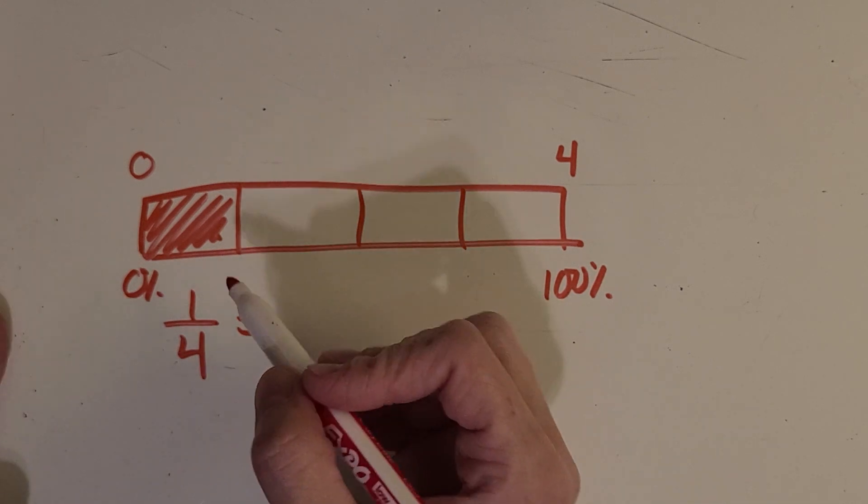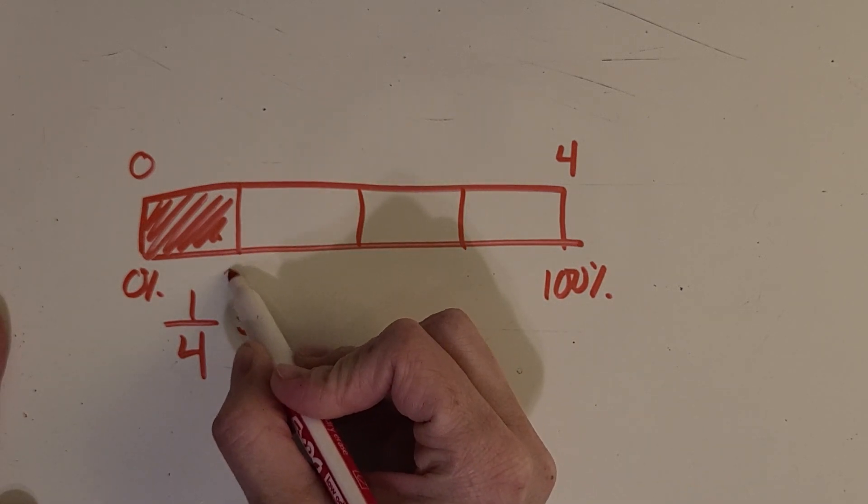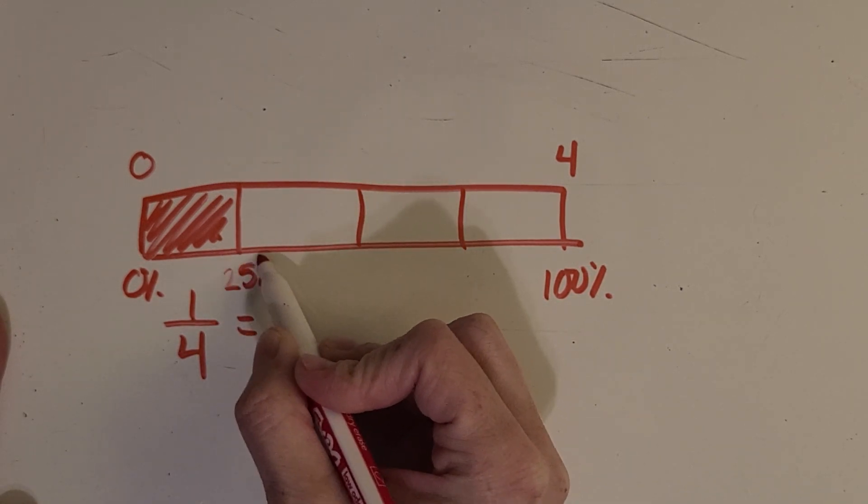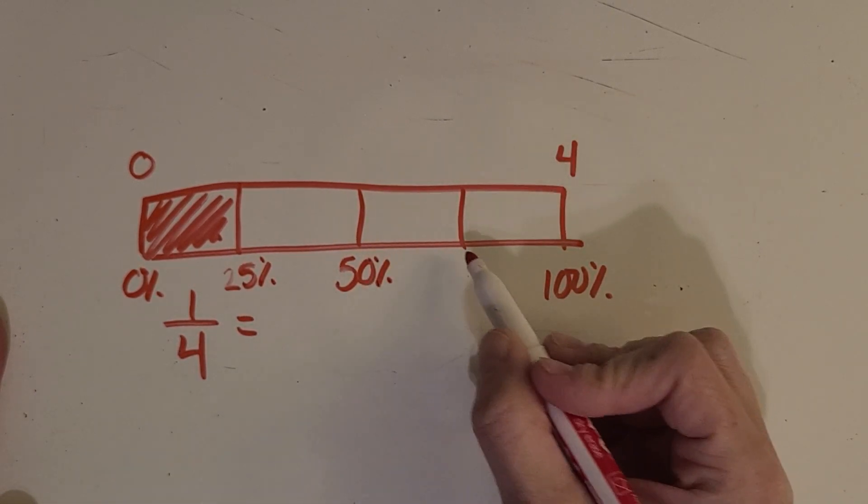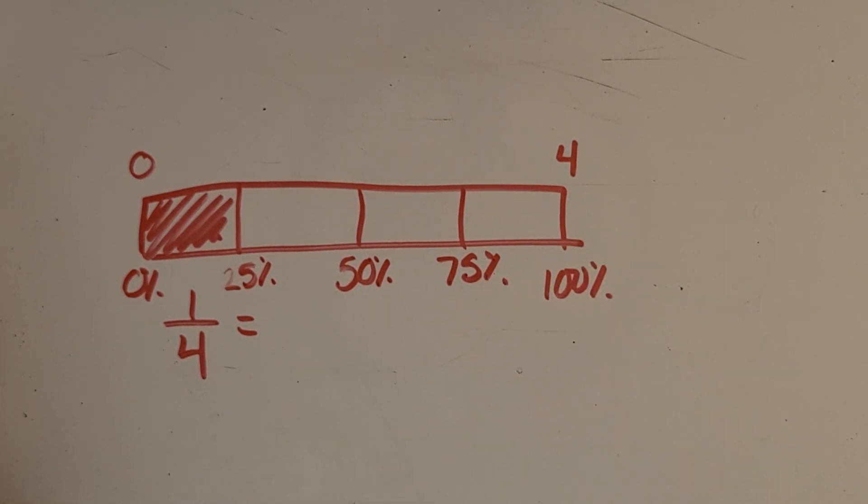25 percent, and then here would be 50 percent, 75 percent. Reminds me of quarters if I'm counting money. So that means that one fourth equals, you got it, 25 percent.